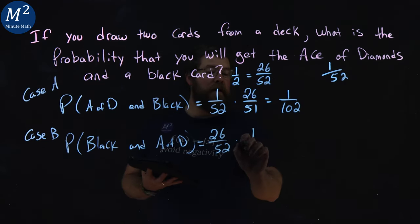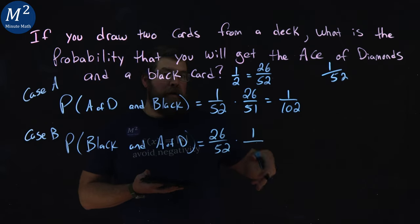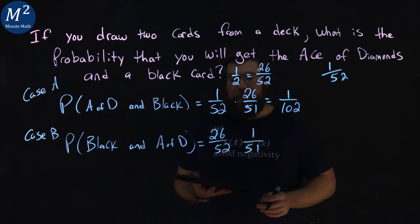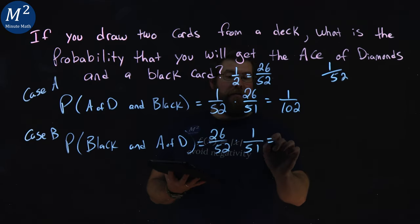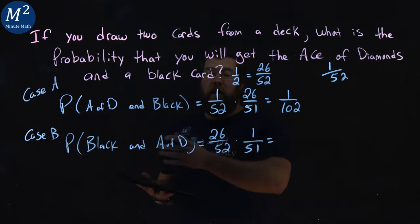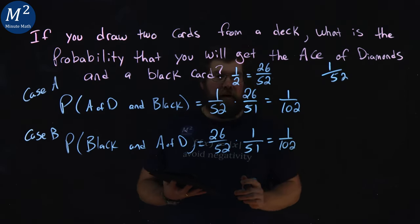there's only one ace of diamonds, and there is now one card out, one black card out, so there's 51 cards left in the deck. Now, if you look here, this is the same multiplication problem that's happening. This is also a 1 out of 102 chance.